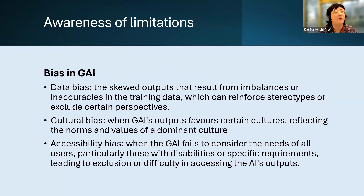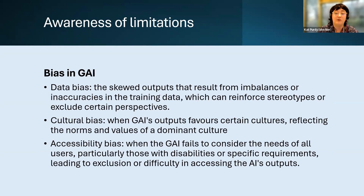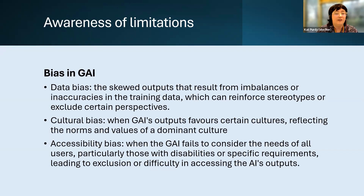Another limitation is bias in generative AI. It's a complex issue influenced by training data, algorithm design, cultural differences, and context. If a model mainly learns from English texts from Western sources, it may struggle to understand content from other cultures or languages. When certain groups are underrepresented in training data, the model performs worse for them — for example, speech recognition may be less accurate for certain accents, or generated content may favor more commonly represented groups.